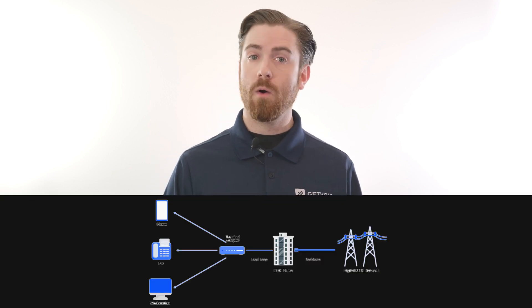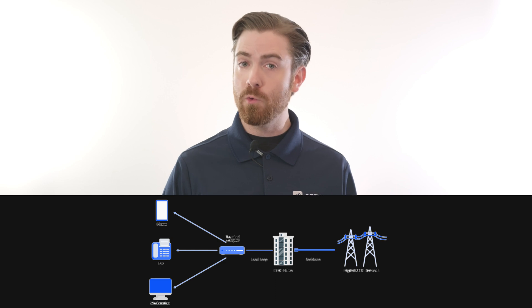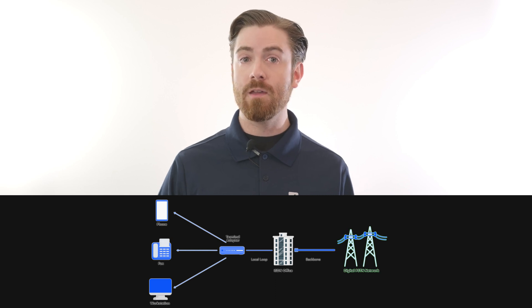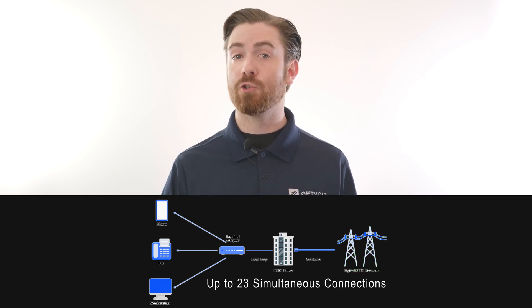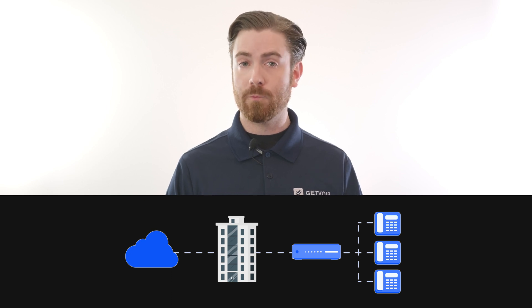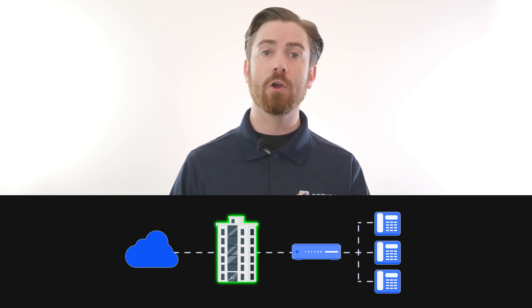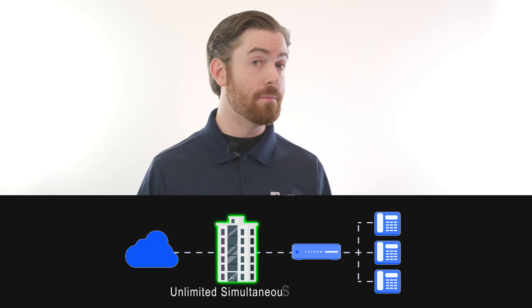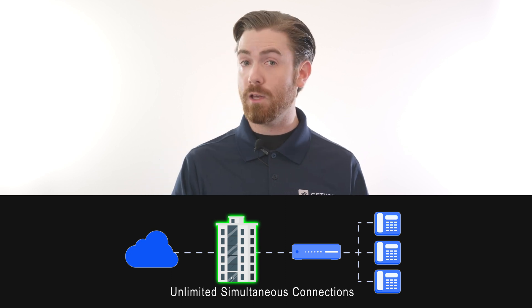The difference between PRI and SIP trunking is that PRI requires a physical wired connection to the digital PSTN to allow for 23 simultaneous communication channels or lines, while SIP trunking virtually connects to the IP network to allow for unlimited VoIP-based communication channels.